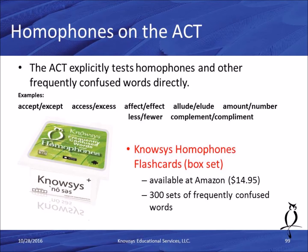A new set of flashcards is our homophones and frequently confused words — a category explicitly tested on ACT, SAT, and PSAT. Confusing words like accept/except, access/excess, affect/effect, allude/elude, amount/number, less/fewer, and complement/compliment. It's 300 sets of frequently confused words and homophones — completely separate from vocabulary. Currently only available as a box set through Amazon, with a Kindle format coming soon.